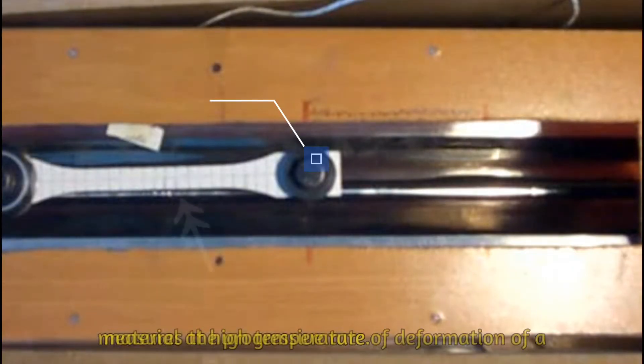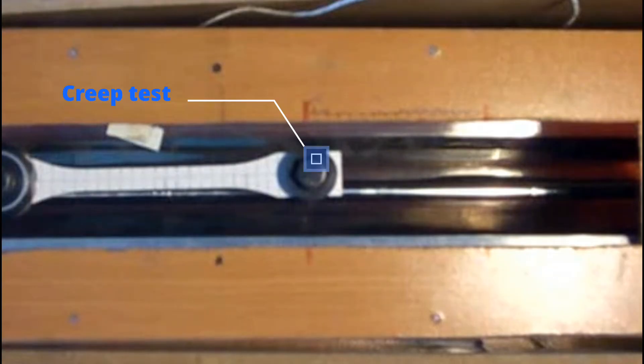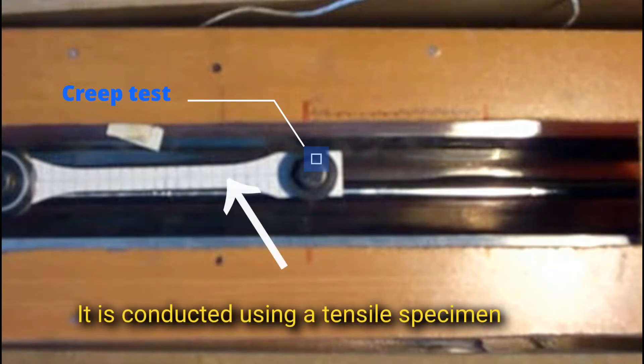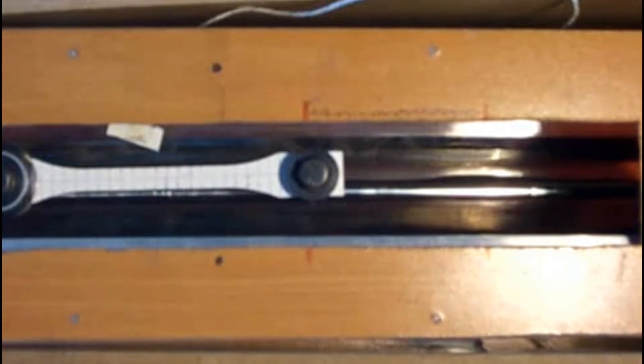A creep test measures the progressive rate of deformation of a material at high temperature. It is conducted using a tensile specimen to which a constant stress is applied at a constant temperature, often by the simple method of suspending weight from it.